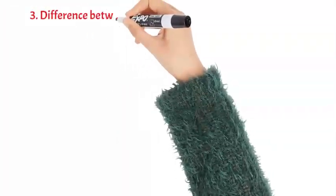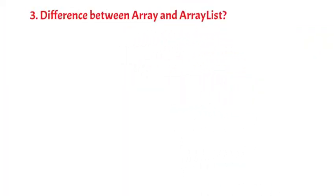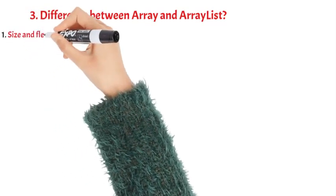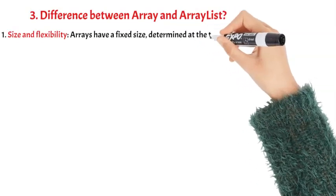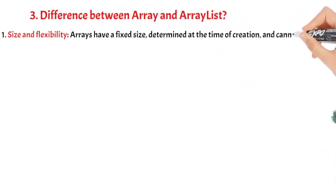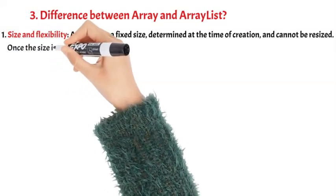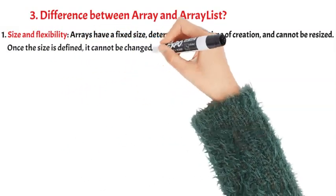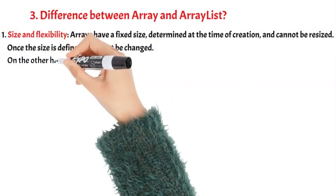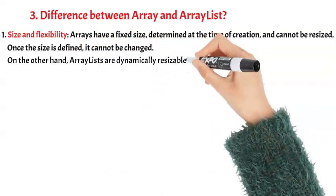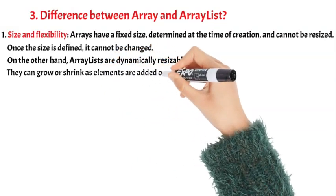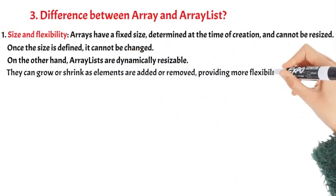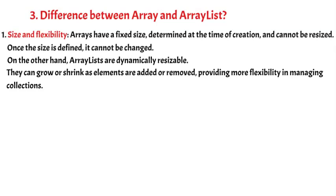Difference between Array and ArrayList. Difference 1: Size and Flexibility — Arrays have a fixed size determined at the time of creation and cannot be resized. Once the size is defined, it cannot be changed. On the other hand, ArrayLists are dynamically resizable; they can grow or shrink as elements are added or removed, providing more flexibility in managing collections.